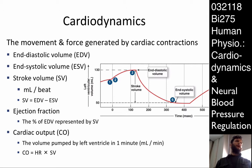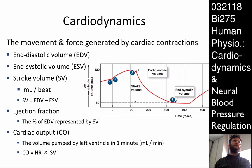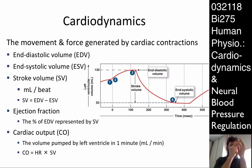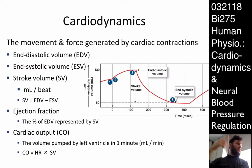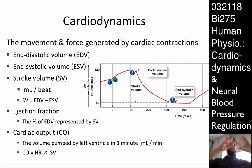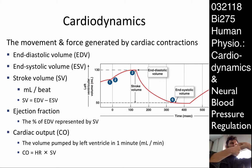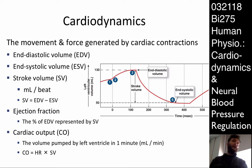When the heart contracts, it's not just a simple squeeze. It actually wrings itself out. The muscle fibers spiral around the heart towards its apex, and as it contracts, it does this sort of wringing-a-towel action — it contracts down that space, the ventricles. It's a pretty efficient way to contract.